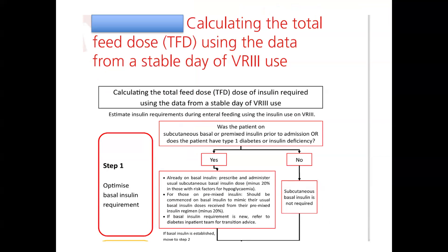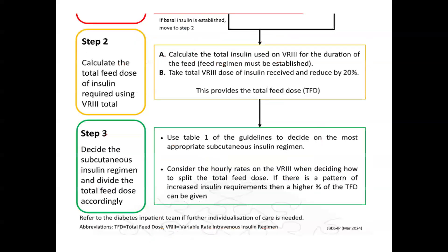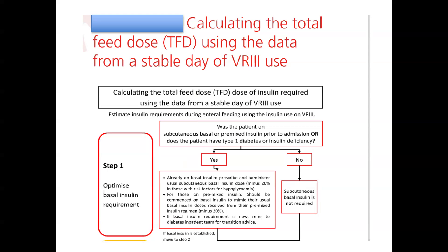One of the common things asked based on the guidelines is to identify and calculate the total feed dose, taking into consideration a previous stable day of variable rate insulin infusion. The questions ask about the subcutaneous insulin regimen applied to the patient based on calculations in steps one, two, and three. First and foremost, we should establish if the patient is already on basal insulin. If so, we should aim to optimize the basal insulin requirement.